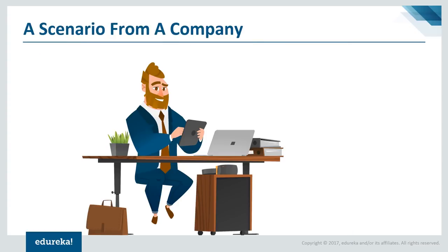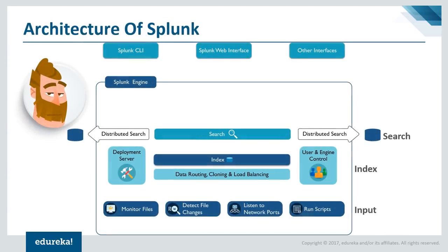We almost forgot about Billy. Billy is working hard to gain operational intelligence by searching and analyzing the data collected by Sam. Our data is in the index, and the user has the ability to search it, but users will not be given direct access to the indexer — meaning the physical system or GUI. The normal user will be given access only to the search head, where they come and write their queries. The search head then distributes the search among all the search head cluster members. If more members are added to Billy's team, he can distribute the search across various instances using distributed search.